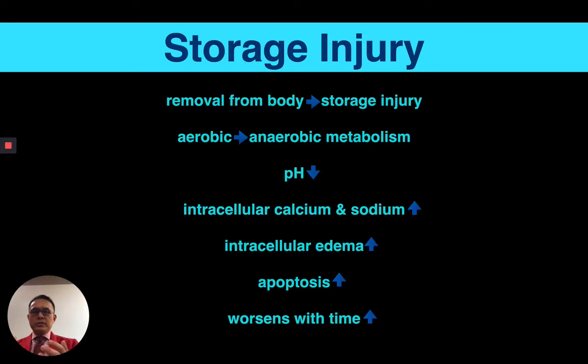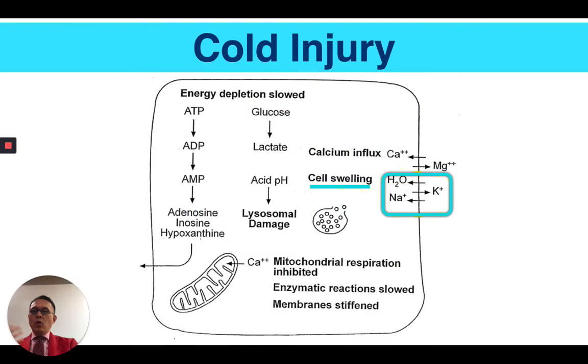Storage injury is one of the first injuries we need to discuss. There are several types: storage injury, cold injury, and ischemia reperfusion injury. When a graft is taken out of the body, you immediately get storage injury — aerobic to anaerobic metabolism change, pH becomes much more acidic, and there's an influx of calcium and sodium into the cell causing intracellular edema and apoptosis. Cold injury is similar — there's an influx of sodium and calcium because the sodium-potassium ATP pump becomes dysfunctional.